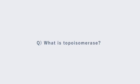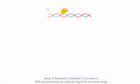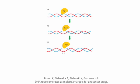What is topoisomerase? Topoisomerase is the DNA untangler, ensuring smooth replication by preventing knots and tangles in the DNA strands.